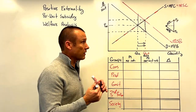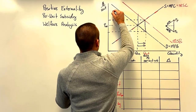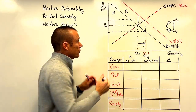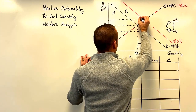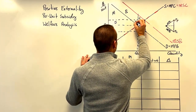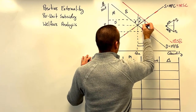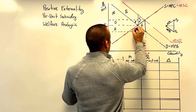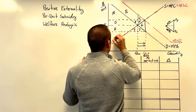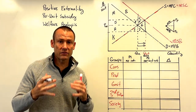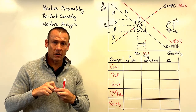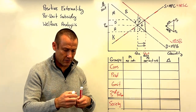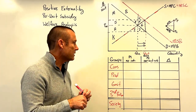Let's put in our letters for the areas on the graph. Going with the alphabet: A, B, C, D, E, F, G, H, I, J, K. I think those are the divisions I'm going to need to do this analysis. Let's get to it — we're going to go kind of fast because we don't want this video to be any longer than it needs to be.